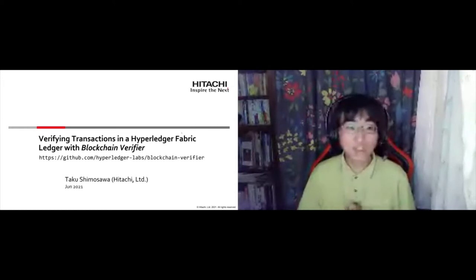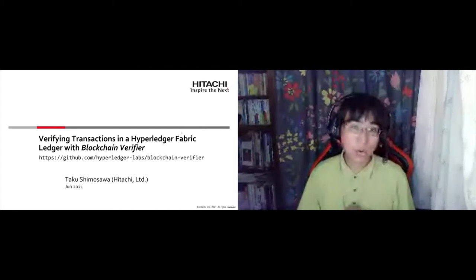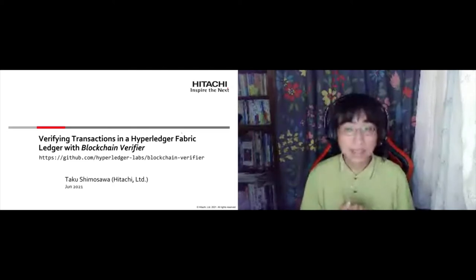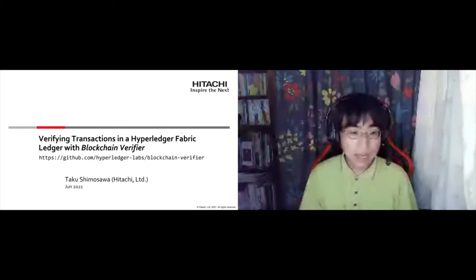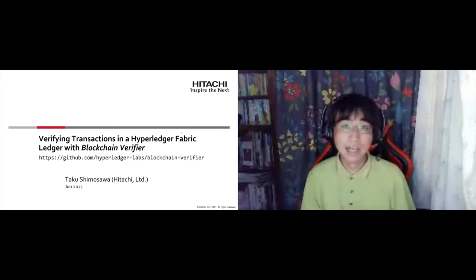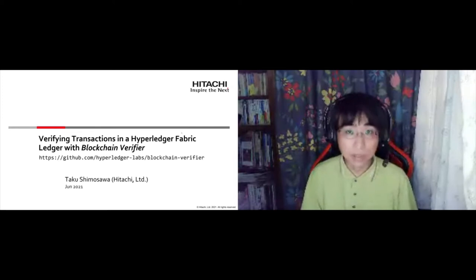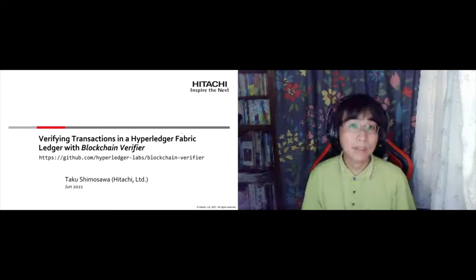Such additional checks include complex checks that need too much time to perform during transaction execution, or checks that need comparison with external systems — verifications with other data that became available after the transactions were invoked. The third reason is detection of faults in blockchain nodes, to detect data corruption caused by hardware faults or software bugs, whether in smart contracts or blockchain platforms.